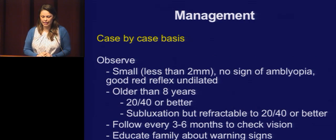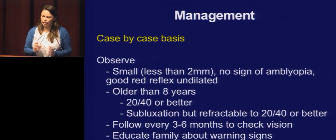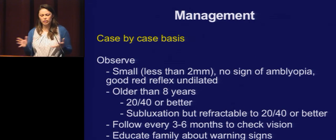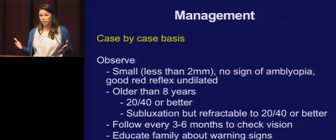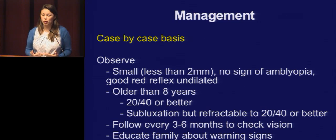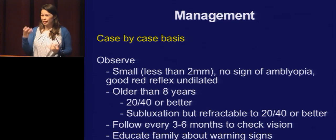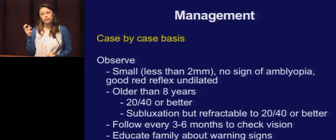Management is on a case-by-case basis. Small — less than a few millimeters — no sign of amblyopia, good red reflex on dilation: you're just going to watch those kids closely. You really want to talk to the family about what to look for — any signs of worsening, a color change, anything that makes them uncomfortable, they should come right back.